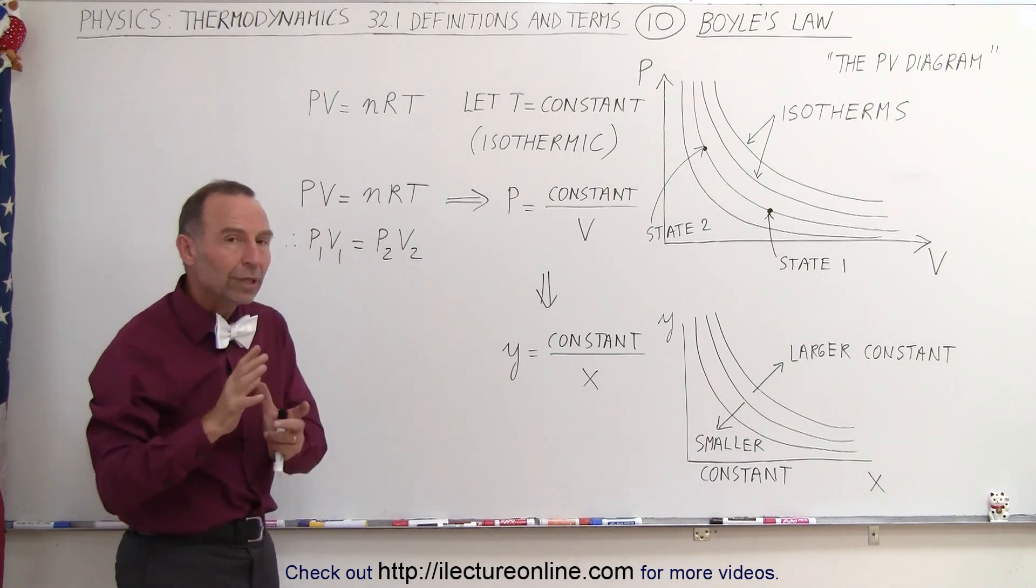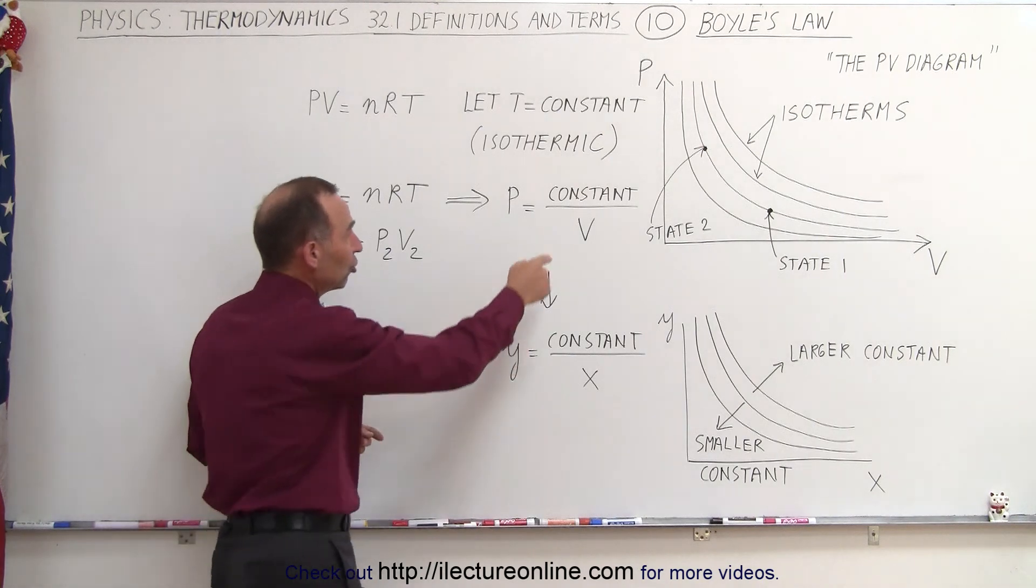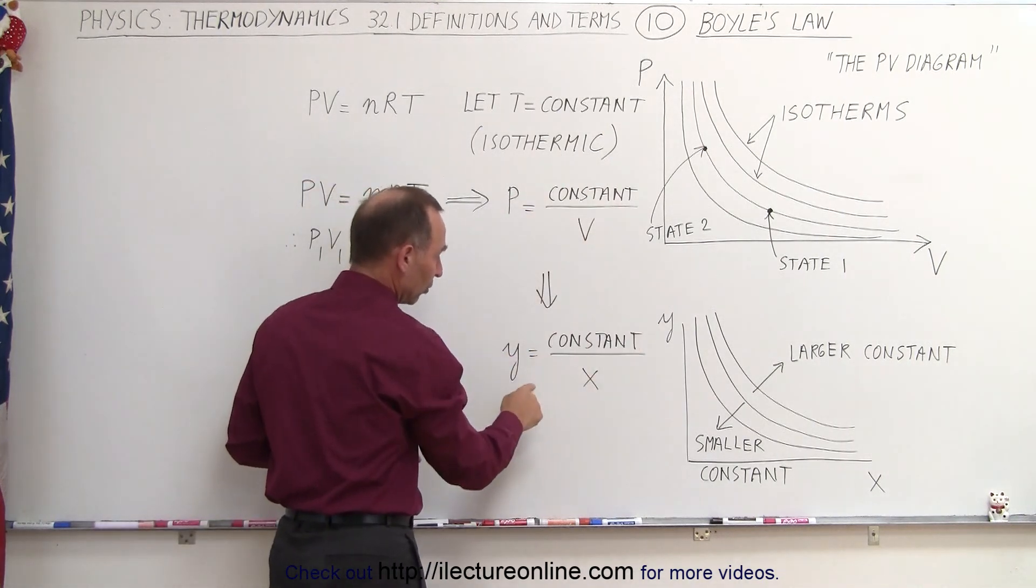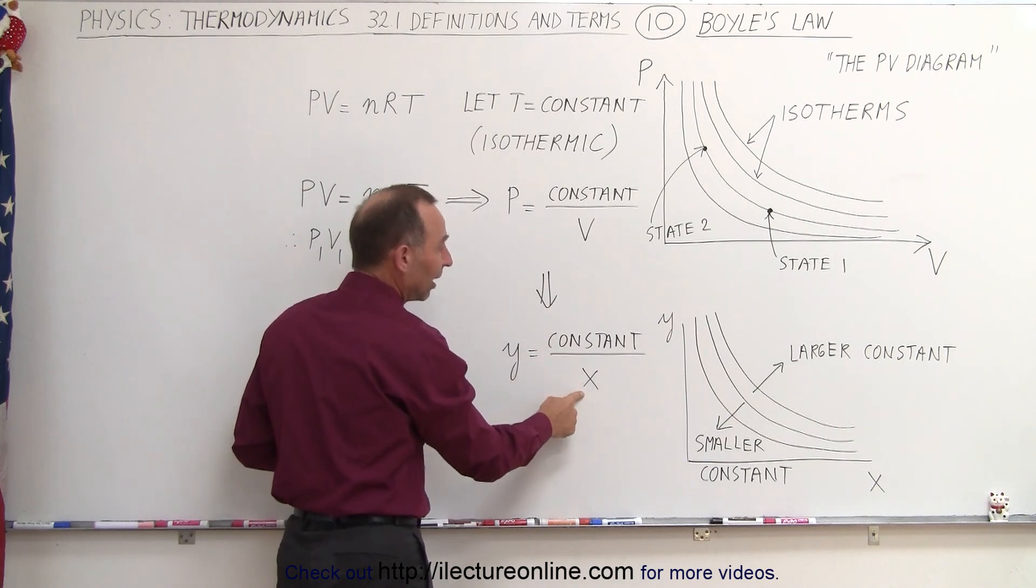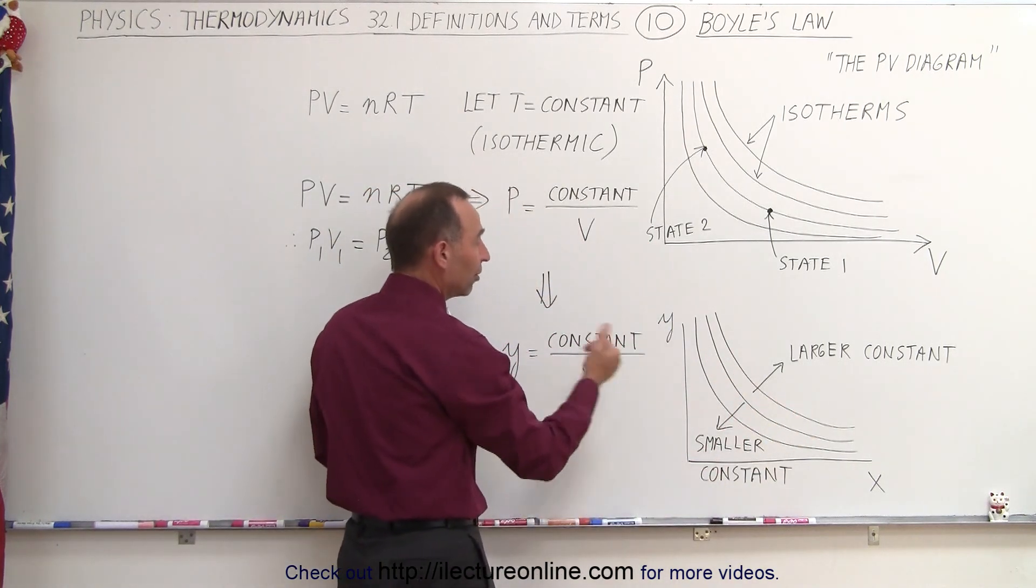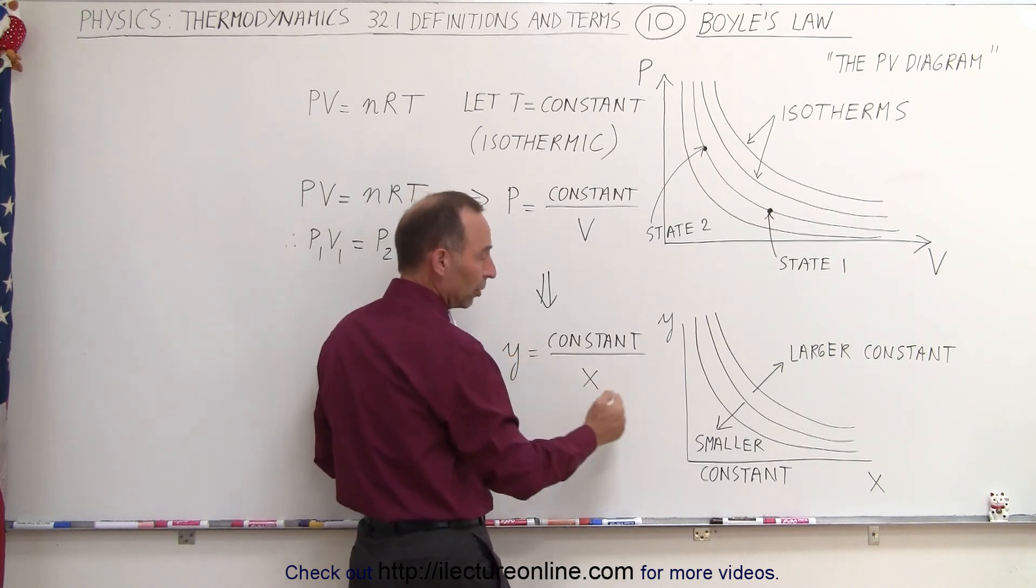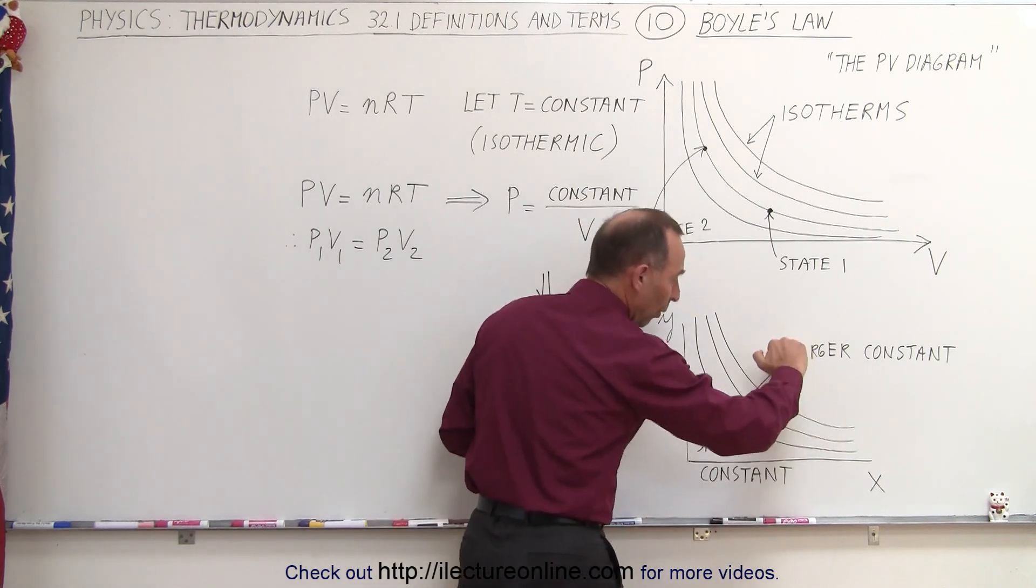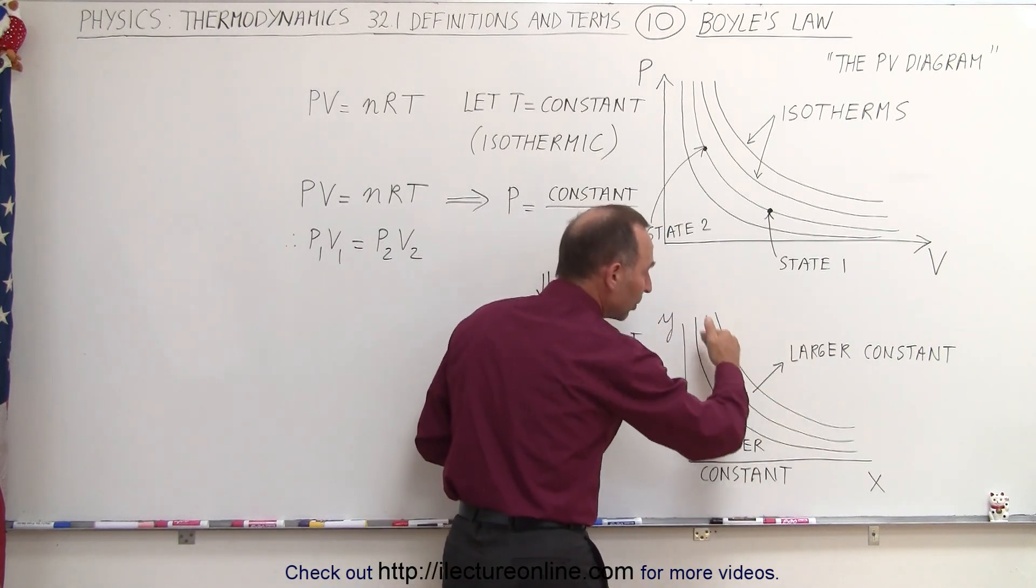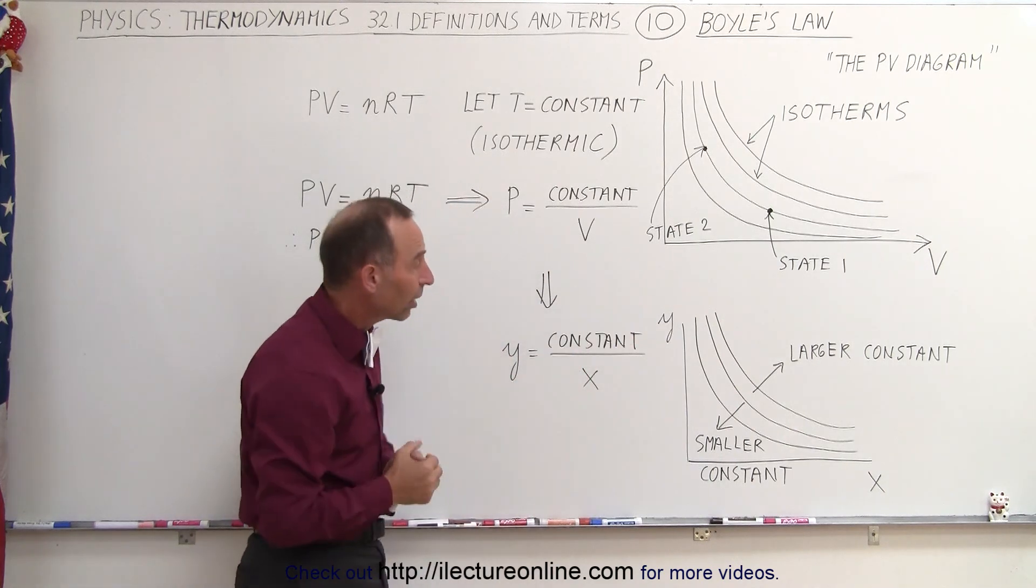Now to relate that, we can do that to the xy axis. If we change this equation to this equation, notice we have y equals some constant divided by x. And here we have an xy axis that describes that very same situation. We know that when x becomes larger, y becomes smaller. As x becomes larger, y becomes smaller along these particular lines, and these lines are determined by the size of that constant.